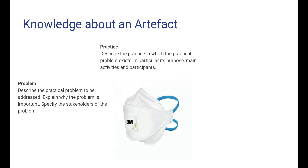Knowledge about an artifact includes knowledge about the practice in which it is to be used — in particular about the purpose of that practice, which are the main activities, and who are the participants. You should also describe the practical problem that triggers the design of this artifact, explain why this problem is important and significant, and clarify for which stakeholders this problem is a problem and who experiences it.